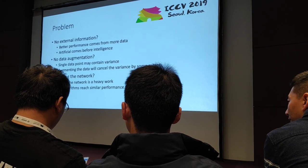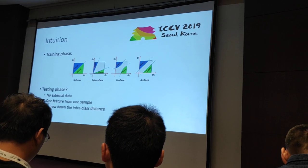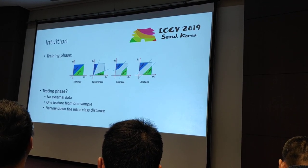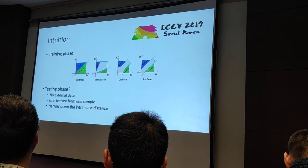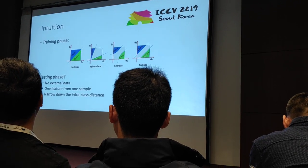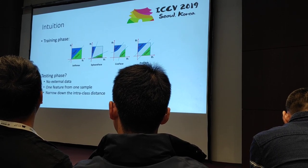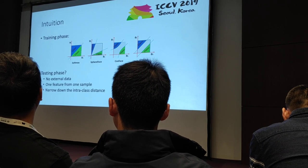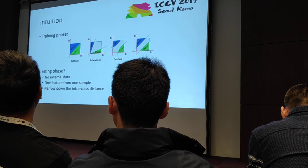In the training phase, we have several loss functions: cosine phase, fair phase, or arc phase. The purpose is the same — we want to enlarge the distance between the categories or between the face classes, and narrow down the intra-class distance.